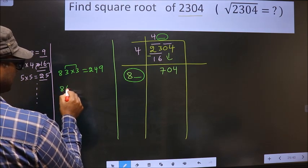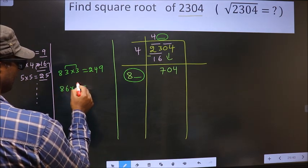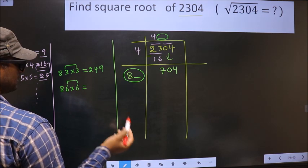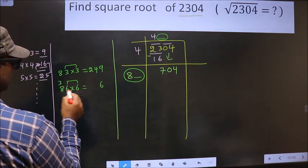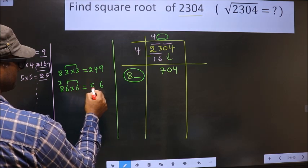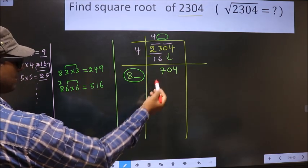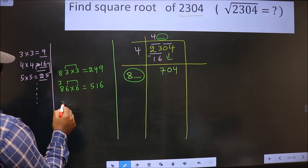So if we take 6. These 2 numbers should be same. 6 into 6, 36. 6 8's 48 plus 3 is 51. Even this also far. So if we take 8.